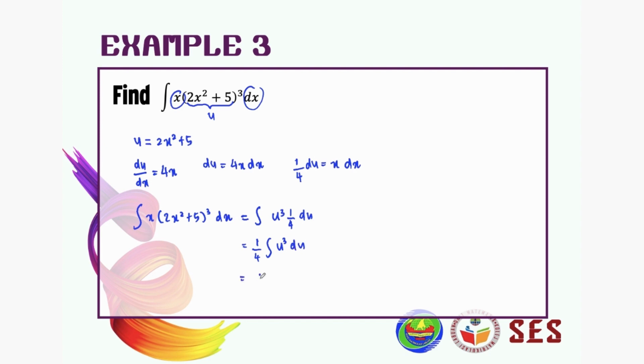Okay, so u to the power of 3 gonna become u to the power of 4 divided by 4. And don't forget to plus our c. So I continue it here, it's gonna become 1 over 16 u to the power of 4 plus c.